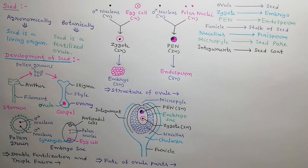In fate of ovule parts, whole of the ovule transforms into seed. Zygote develops into embryo, PEN develops into endosperm, funicle makes stalk of the seed, nucellus forms perisperm, micropyle makes seed pore, and integuments turn into seed coat.